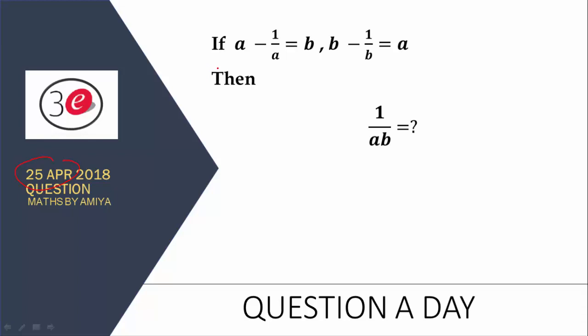25th April question. The question is in front of you. A minus 1 by A is equal to B. B minus 1 by B equal to A. Then you have to find the value of 1 upon AB. This is your question of 25th April.